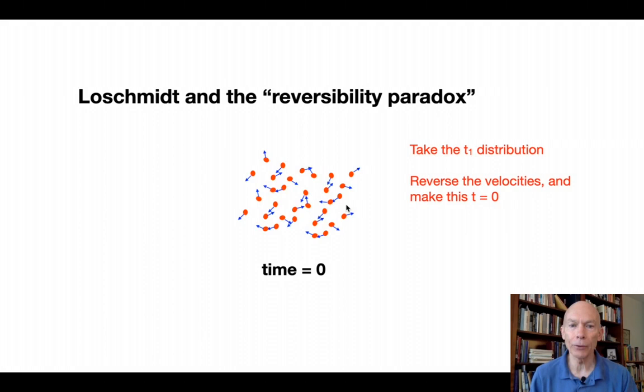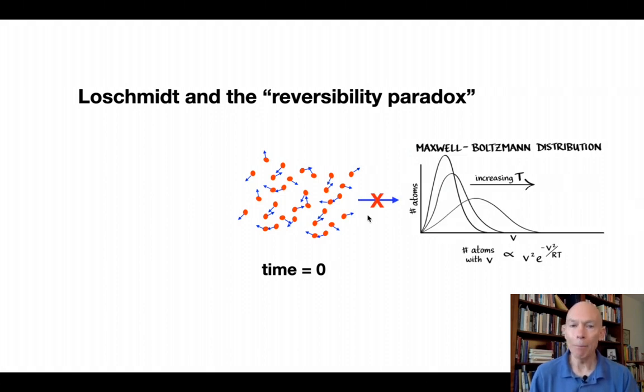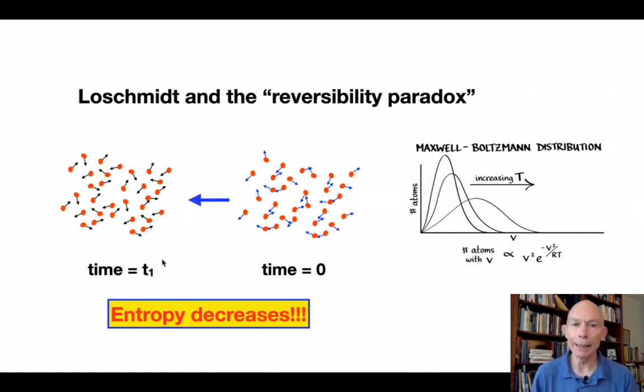Then do the following. If you see the motion here, look at the arrows here. I went through and did this, changed all of the motions into the opposite direction. Reverse the velocities and make this equal to t equals zero. If you reverse this system and call that t equals zero, what happens? What happens is that it no longer goes towards the Maxwell Boltzmann distribution. It goes in the other direction. It goes back to where we started. In this direction, entropy decreases.